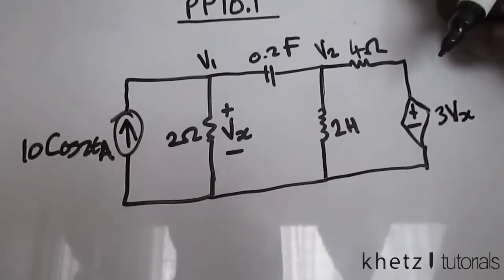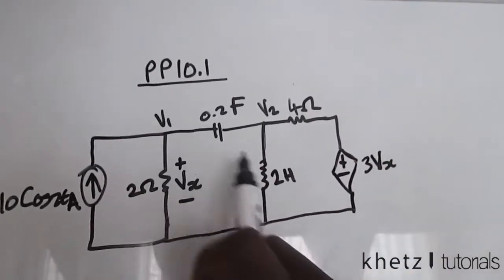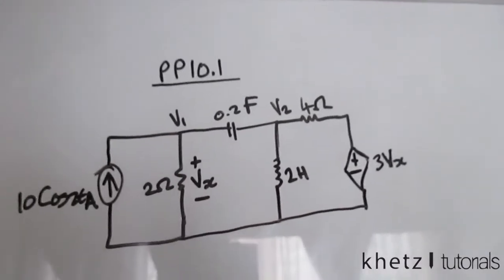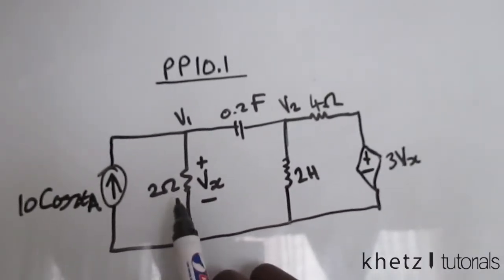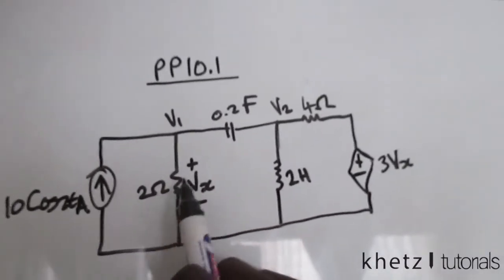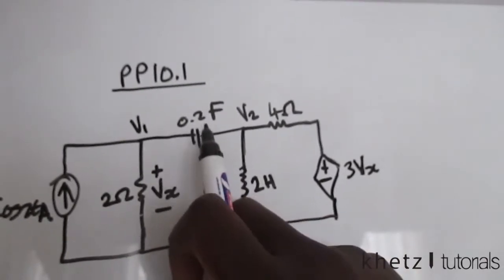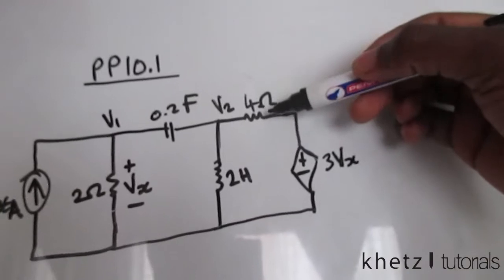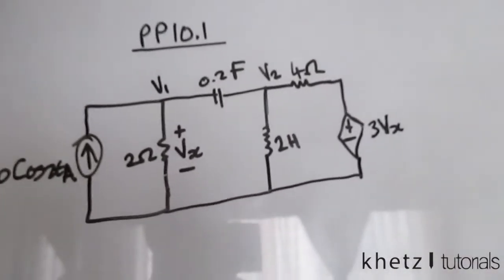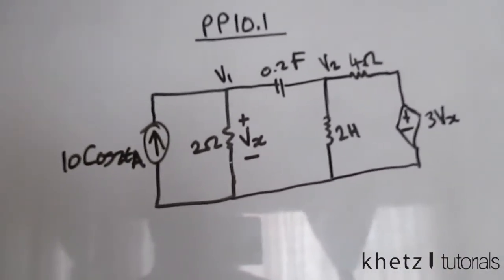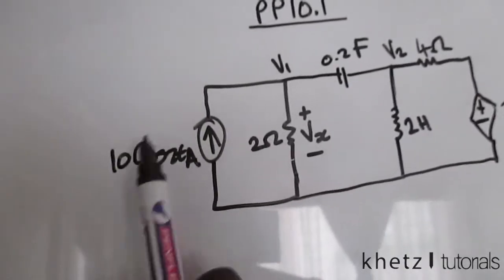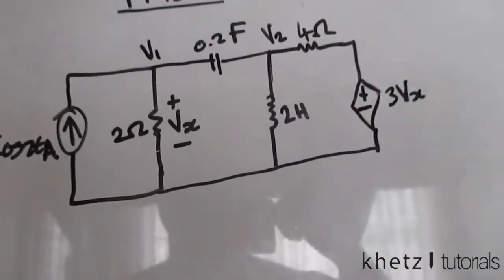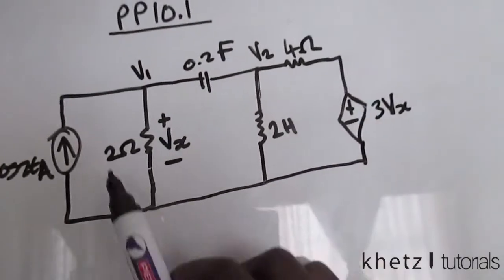The first thing you'll notice is that every component has different units. This is a resistor in ohms, this is a capacitor in farads, this is an inductor in henries, and this is a resistor in ohms. Guided by the fact that we have a sinusoidal signal, we can transform all of these into impedances.